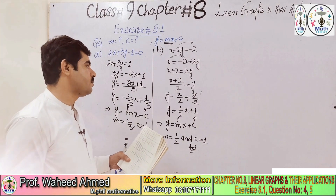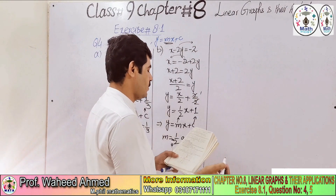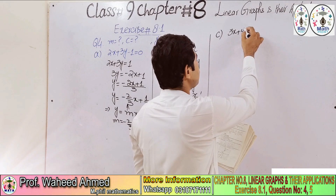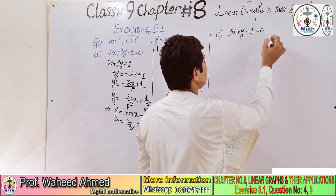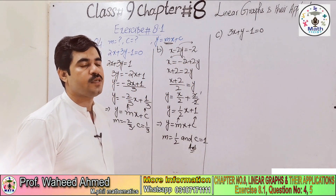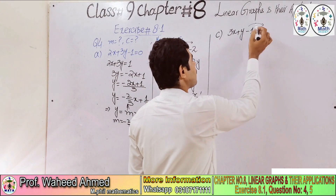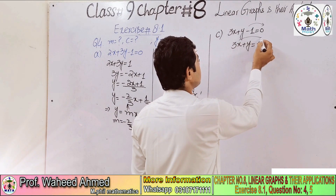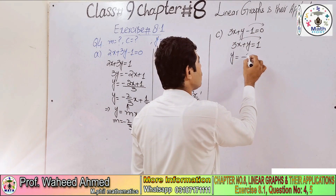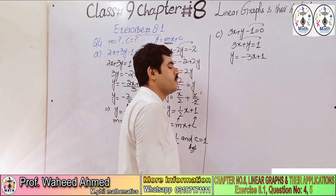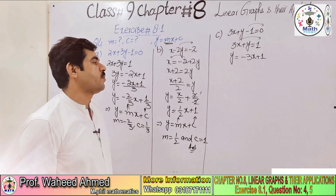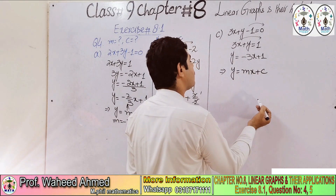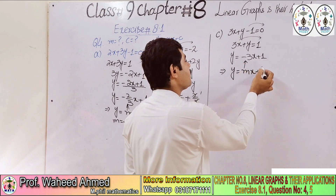Part C is 3x + y - 1 = 0. Here we make y the subject. Moving minus 1 to the other side gives plus 1. So 3x + y = 1. Moving 3x: y = -3x + 1. Now compare with y = mx + c: here y = -3x + 1.